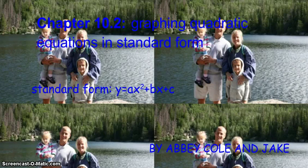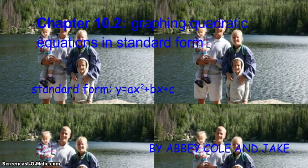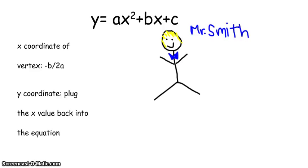Today we are learning about quadratic equations in standard form. The standard form is y equals ax squared plus bx plus c. To find the x coordinate of the vertex, use the equation negative b over 2a. To then find the y coordinate, plug the x value back into the equation.